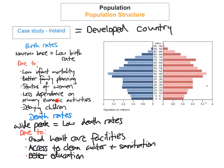To summarise Ireland: it's a developed country with a narrow base indicating a low birth rate, due to low infant mortality, better family planning, improved role and status of women, less dependency on primary economic activities such as farming, and women delaying having children until later. The death rate gives a wide peak, meaning low death rates, due to better healthcare facilities, access to clean water and sanitation, and better education.